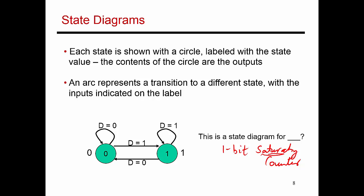This is usually expressed with a finite state diagram, where each circle represents a different state. In this case, my state is a zero; in this case, my state is a one. The value inside the circle represents the output — the output is nothing but the state itself, so they match up. Then I have arcs that represent going from one state to another, and the label on the arc tells me the input value that causes the movement from one state to the next.